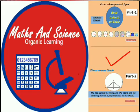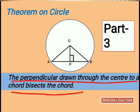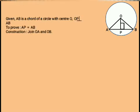Our today's theorem is: the perpendicular drawn through the center to a chord bisects that chord. Let's begin the proof starting with a figure. To continue the proof, it is always expected to mention the given information, the statement to be proved, and any construction if done.